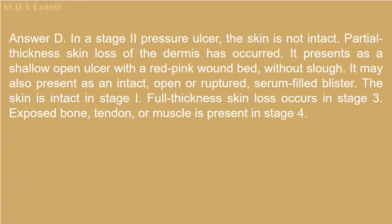Answer D. In a stage 2 pressure ulcer, the skin is not intact. Partial thickness skin loss of the dermis has occurred. It presents as a shallow open ulcer with a red-pink wound bed without slough. It may also present as an intact, open, or ruptured serum-filled blister. The skin is intact in stage 1. Full thickness skin loss occurs in stage 3. Exposed bone, tendon, or muscle is present in stage 4.